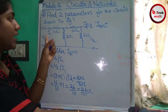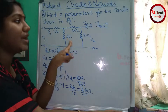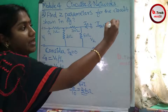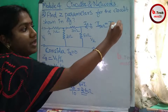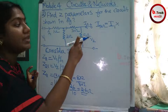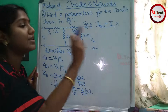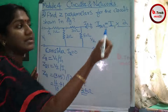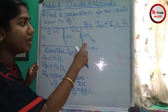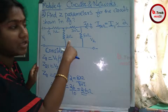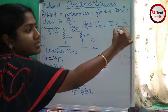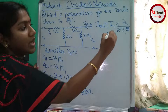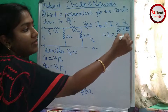We apply the current division rule. The current through the 5 ohm branch equals total current I1 multiplied by the parallel branch resistance in the numerator. The parallel resistance to the 5 ohm branch is 2 ohm, and the total resistance is 2 plus 3 plus 5 equals 10. So I_5ohm equals I1 times 2 by 10, which is I1 divided by 5.